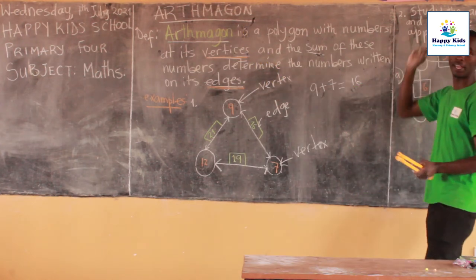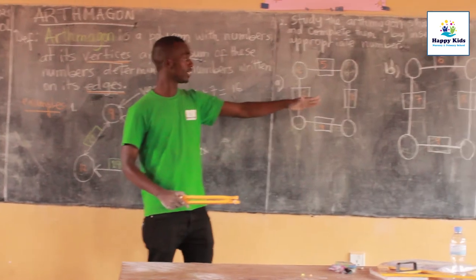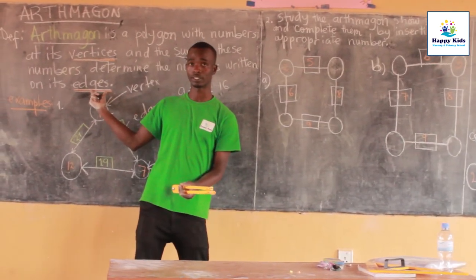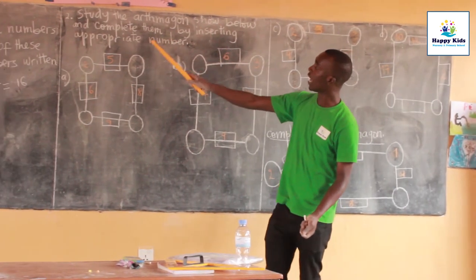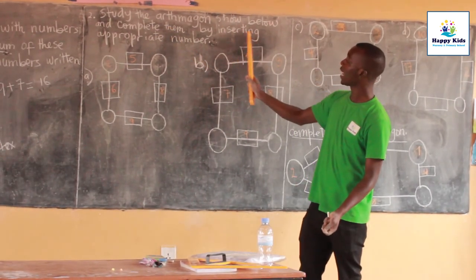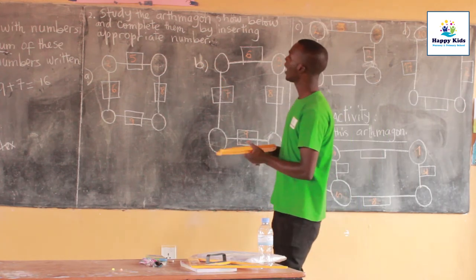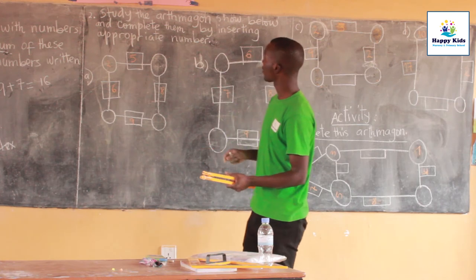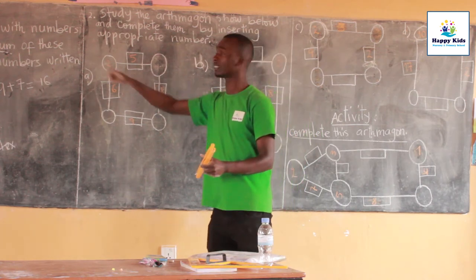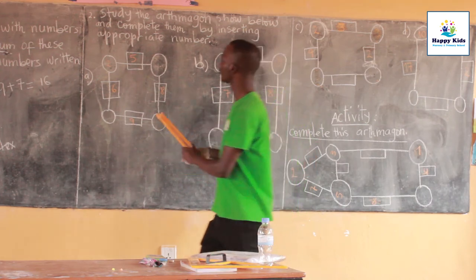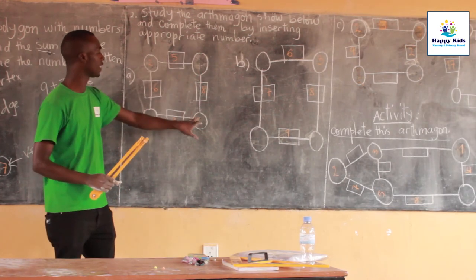Now let's see the next part — different Alphimagons where we can complete them by putting in appropriate numbers. They are telling us to study the Alphimagon and complete it by putting in the appropriate numbers. Before we start, this Alphimagon has different numbers — some are in the vertices, others are in the edges. We have to know which number is missing: is it the number in the vertices or the number in the edge?